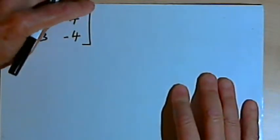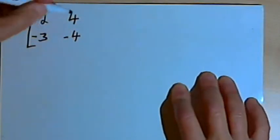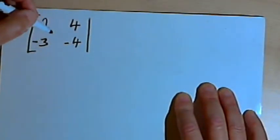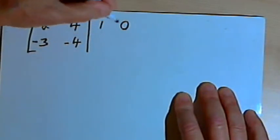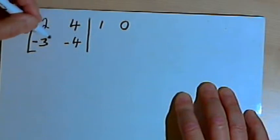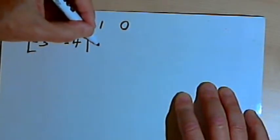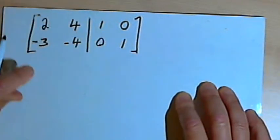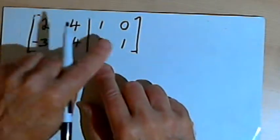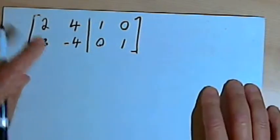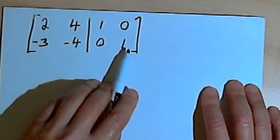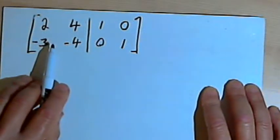So now what I want to do is take a different matrix and see if we can find its inverse. This is really fairly easy. What we're going to do is take that matrix and make an augmented matrix out of it — augment it with the identity matrix. So I'm starting with a 2 by 2 matrix: 2, 4, negative 3, negative 4, and I'm augmenting it with the identity matrix: 1, 0, 0, 1. Now I'm going to do reduced row echelon operations on this augmented matrix. After I've gotten the reduced row echelon form on the left, the right side of that matrix will be the inverse of the original.